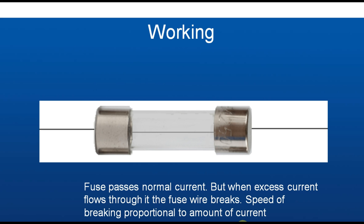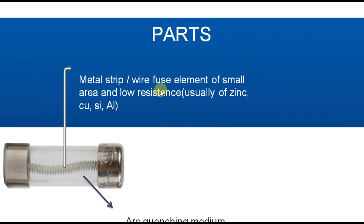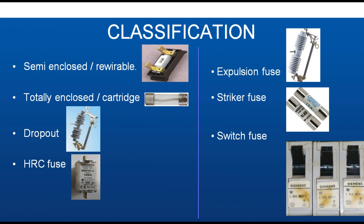Parts of Fuses: It has a fuse wire element of small area and low resistance, usually made of zinc, copper, silicon, or aluminium. An arc quenching medium is present inside to reduce the arc when the fuse wire breaks.